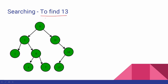How to search in a BST? Now, search — how to start from the root? In BST, check the root. The element we are searching for is 13. The root value is 8.